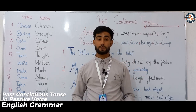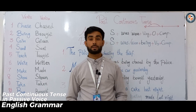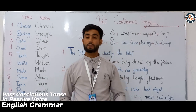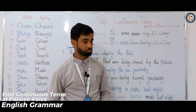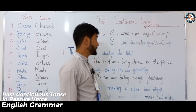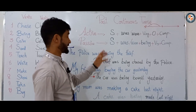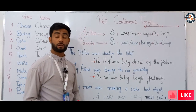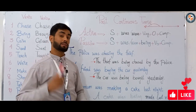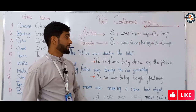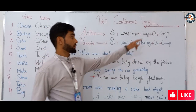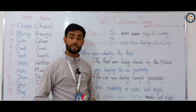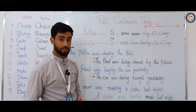So let's begin, let's talk about past continuous tense in the passive. When we talk about past continuous in the passive, it shows an ongoing action in the past — something that was ongoing, something that was in progress in the past.